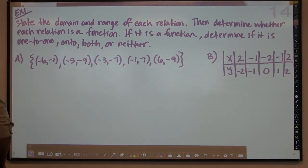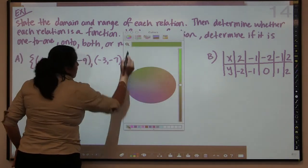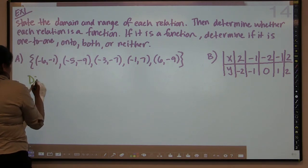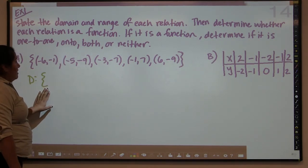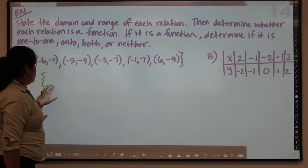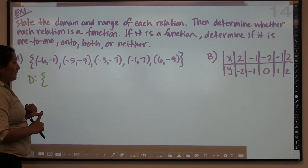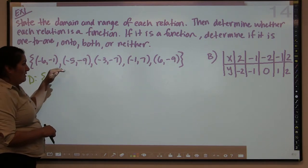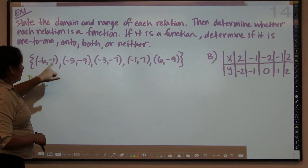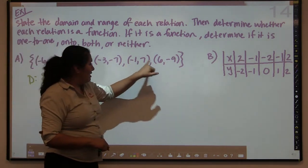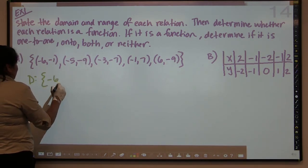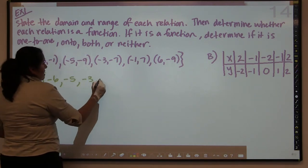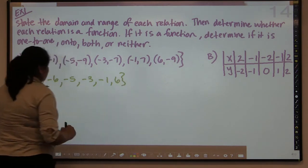In our first example, we must state the domain and range of each relation. We put a D for domain and use these brackets — basically it wants all of the x values. When you list the domain elements, always list them in chronological order, even if they're out of order in the original set. So we have negative 6, negative 5, negative 3, negative 1, and positive 6 — all already in the right order. That's my domain.